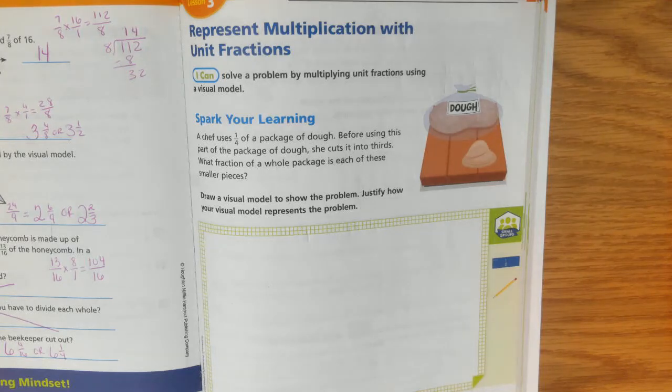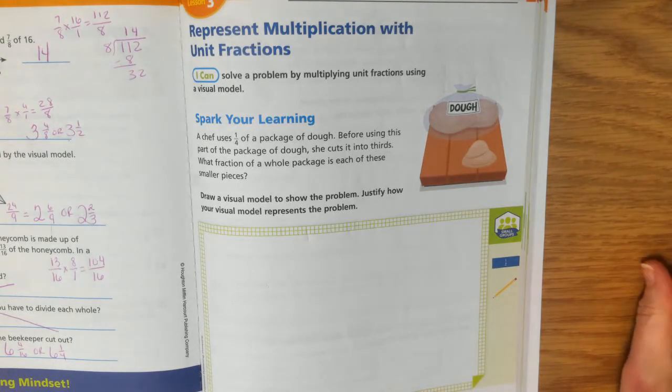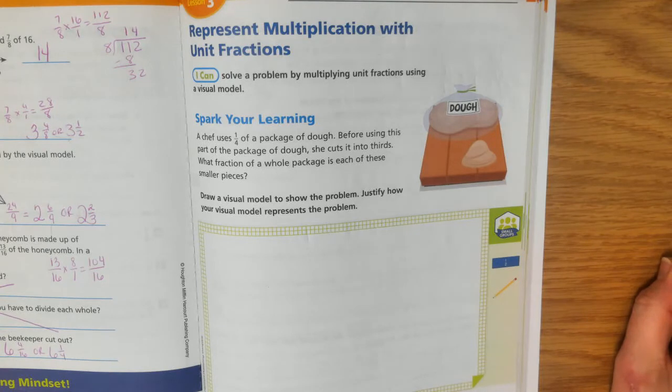Hi fifth graders, we are on week number 26 of remote learning. We're going to be doing module 8, lesson 6, representing multiplication with unit fractions. So you'll be able to solve a problem by multiplying unit fractions using a visual model.